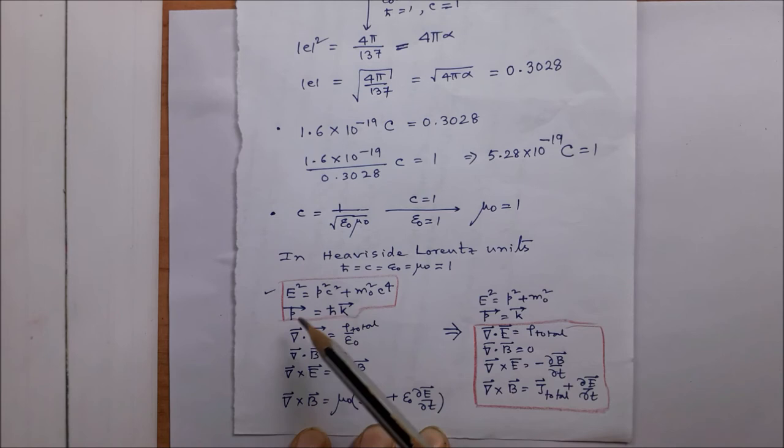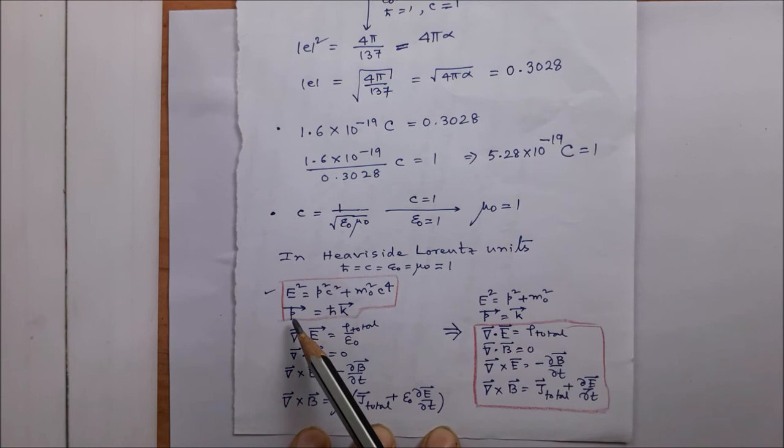So in the Heaviside-Lorentz system, h-cross, c, and epsilon-0 are all set equal to 1. The equations of physics look simpler: the energy-momentum relation becomes E-squared equals p-squared plus m-0-squared, and the famous equation p = h-cross times vector k becomes simply p = vector k.